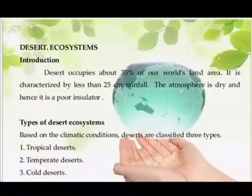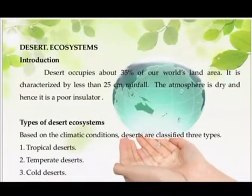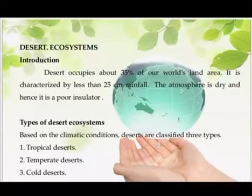Coming to the desert ecosystems — deserts occupy about 17% of land, occurring in regions with an annual rainfall of less than 25 cm. The species composition of such ecosystems is much more varied and typical due to extremes of both temperature and water factors. Based on climatic conditions, deserts are classified into three types: tropical deserts, temperate deserts, and cold deserts.